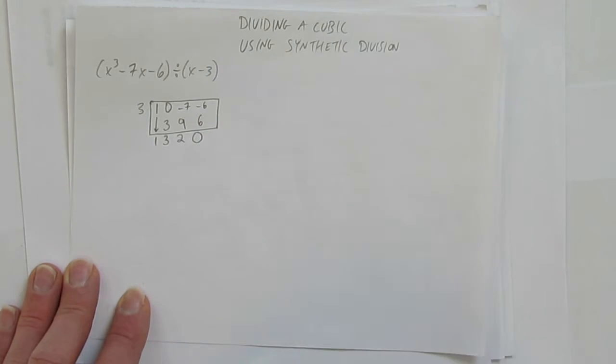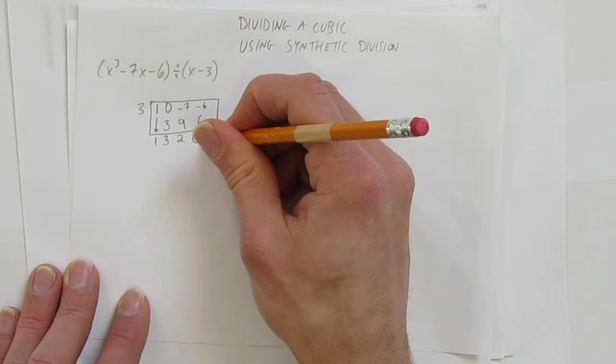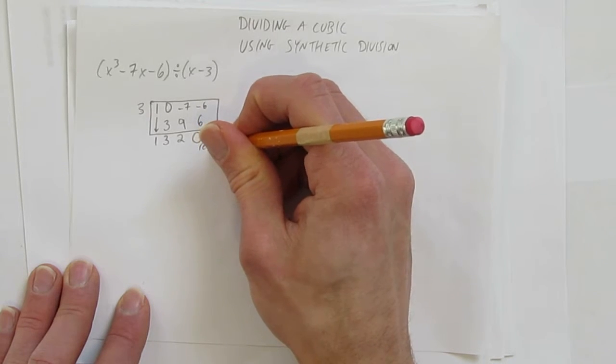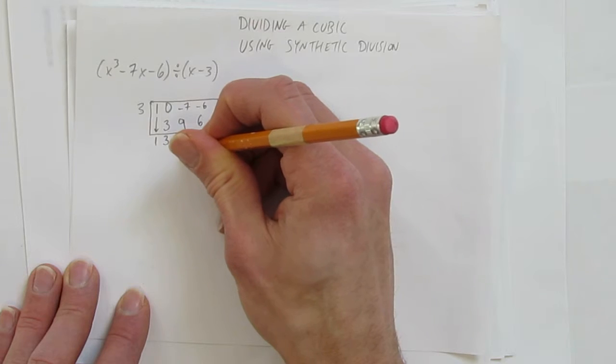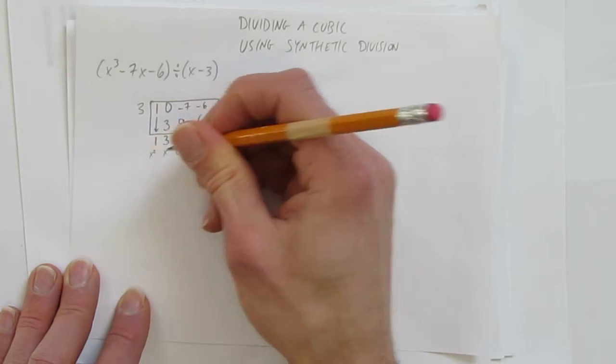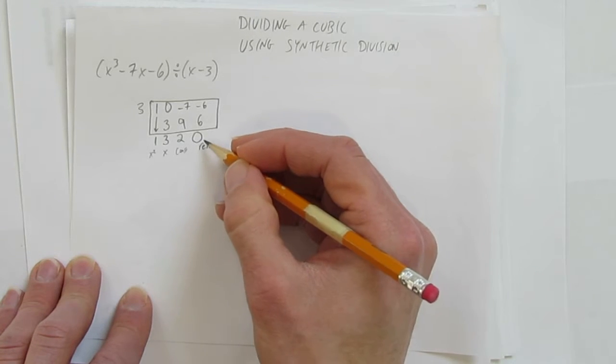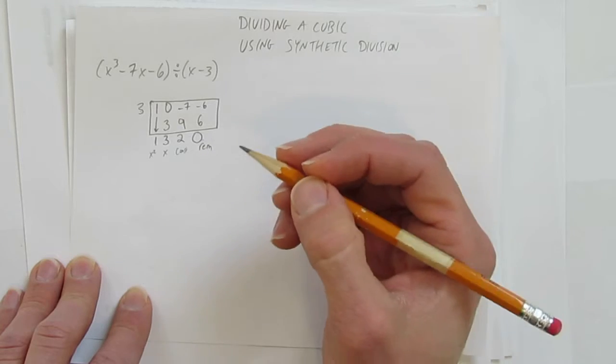Look how quick synthetic division is. We have to write our answer. And it's important to note this 0 is the remainder column. This 2 is in the constant column. These are the x's. And these are the x². I always count from the right side to make sure I have the right spots. And remember that the rightmost thing is the remainder.